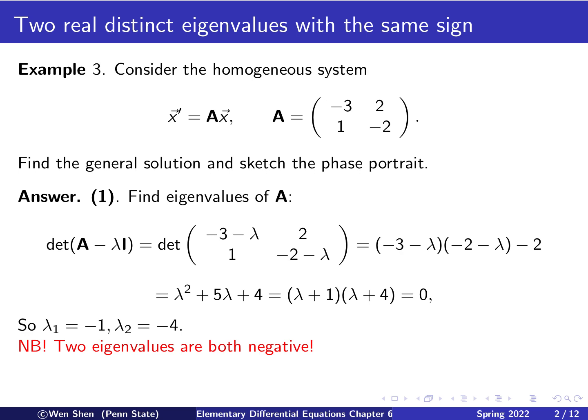We call for attention here that we get two eigenvalues. They are distinct, and they are both negative — that is, they have the same sign.